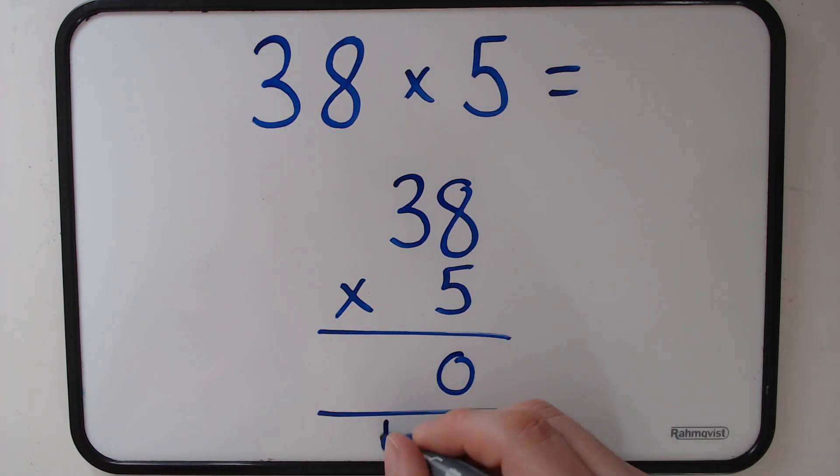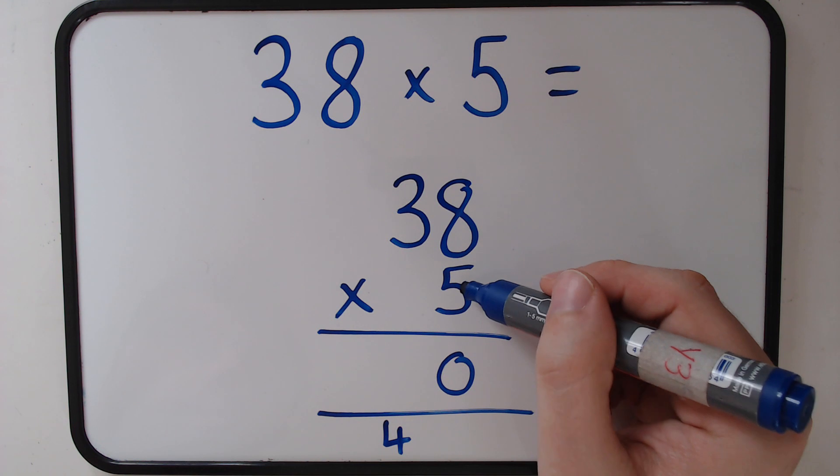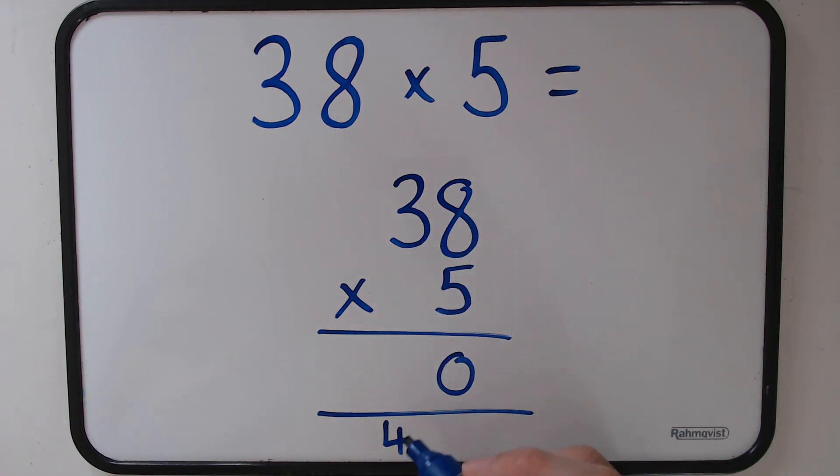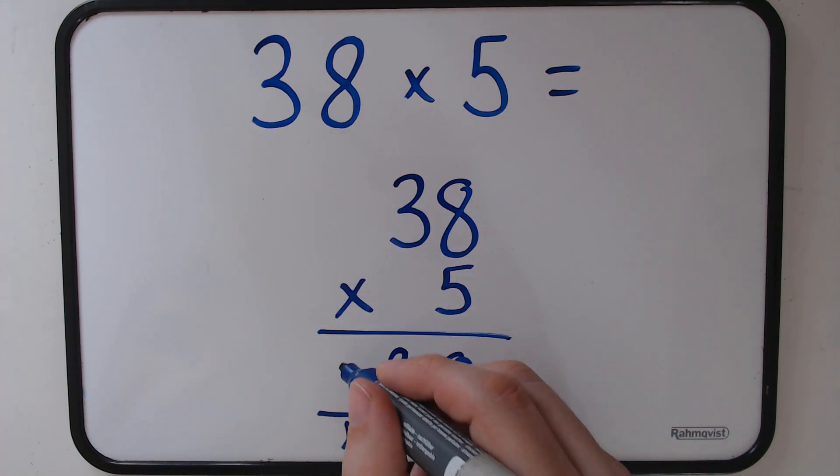We then move on to the next number, so it's now 5 times 3, which is 15. Add the 4 we've carried underneath makes 19. Put the 1 under the hundreds and then move it up, and then our answer is 190.